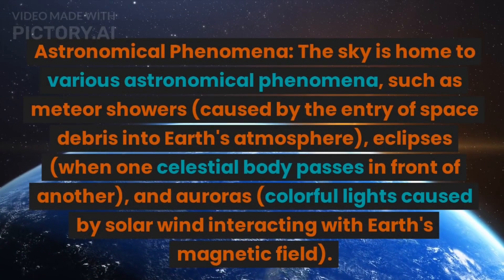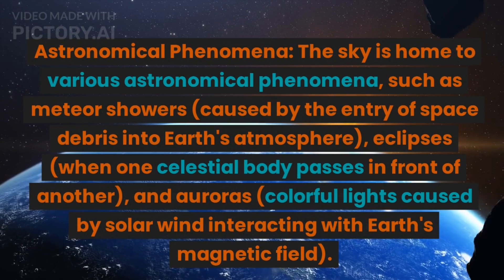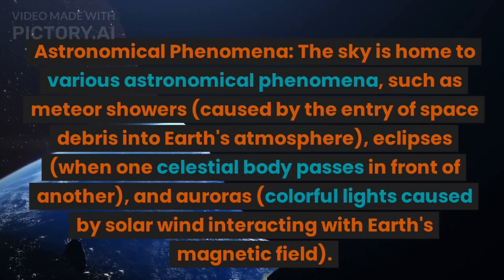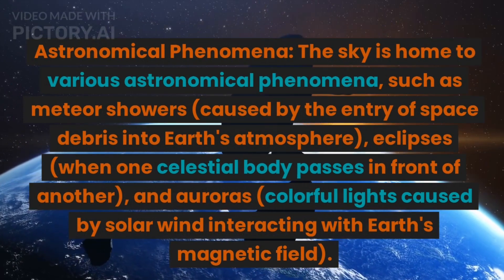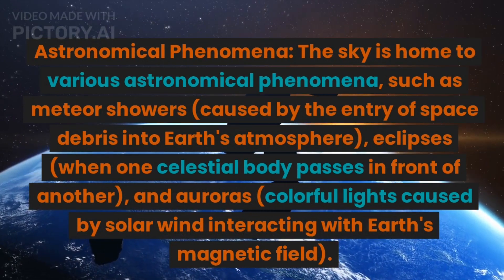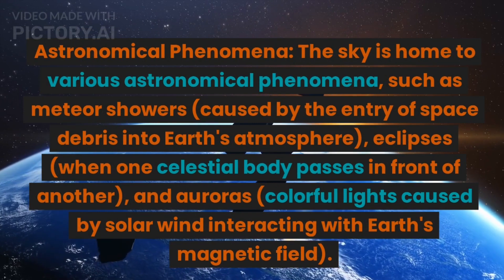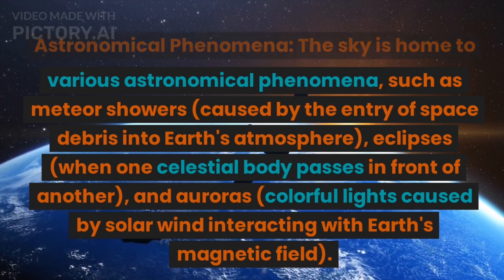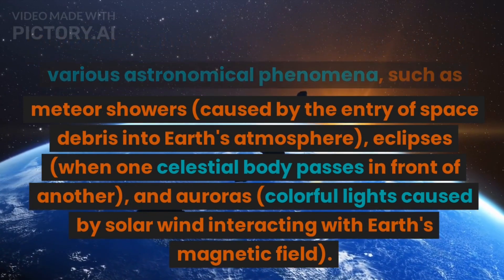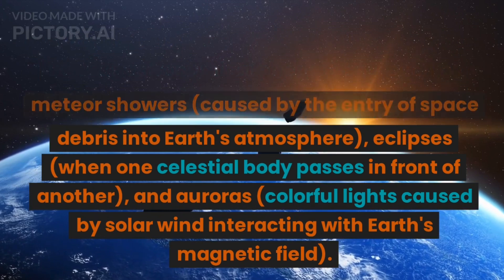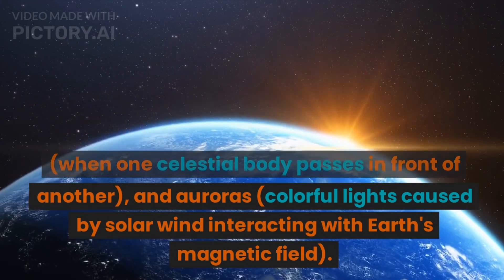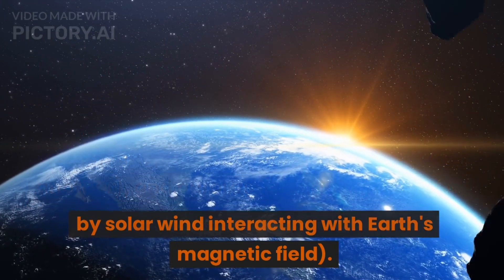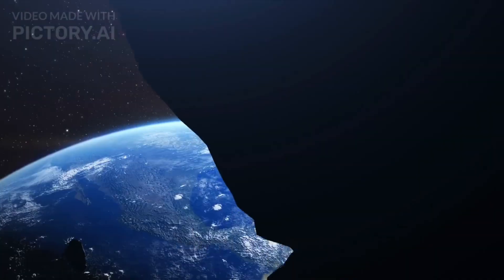Astronomical Phenomena. The sky is home to various astronomical phenomena, such as meteor showers, caused by the entry of space debris into Earth's atmosphere; eclipses, when one celestial body passes in front of another; and auroras, colorful lights caused by solar wind interacting with Earth's magnetic field.